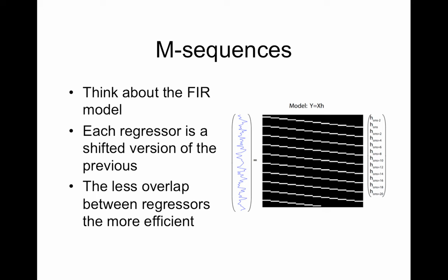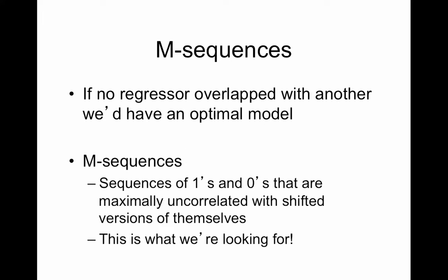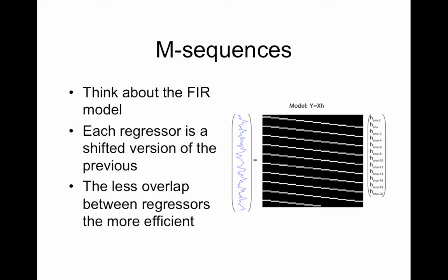Another way to think of this is each regressor is just a shifted version of the previous. We just scoot all these down from where they were in the previous regressor. The less overlap between regressors equals more efficiency, which is what I was just talking about. Optimally no regressor would overlap with another, then we would have an optimal model. We would avoid things like here where the end of this trial is overlapping with the beginning of this trial. These trials you can see are also evenly spaced so not a lot of creativity in that model.